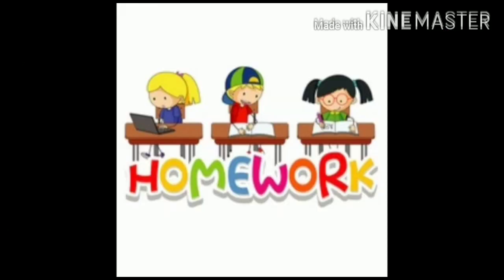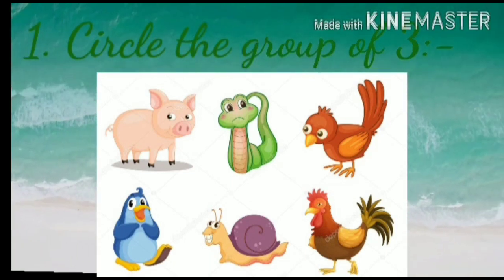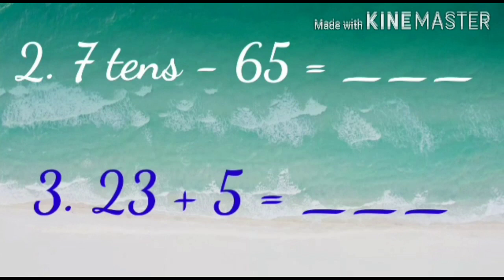Now, it's time to note down the homework. Question number 1 is circle the group of 3. You have to circle the picture in a group of 3. Question number 2 is equal to 7 tenths minus 65. Think and do it. Question number 3: 23 plus 5 is equal to dash.